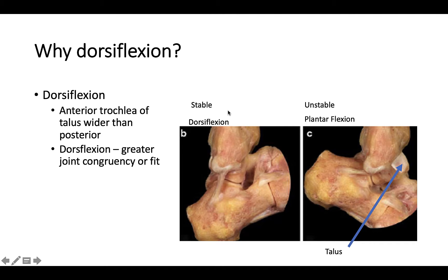If we compare a dorsiflexed position here — remember, posterior is to your left, anterior is to your right — we can see that the talus, when dorsiflexed, is fully congruent with the mortise of the ankle. So rotation in a dorsiflexed position will tend to protect the talocrural ligaments.